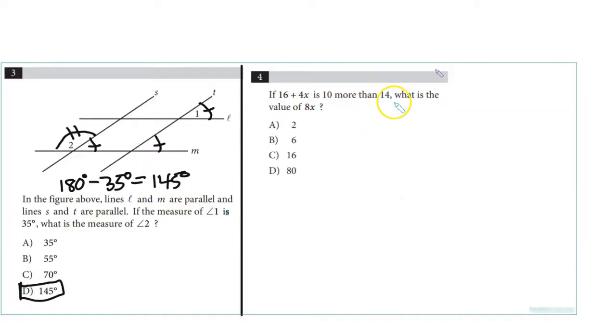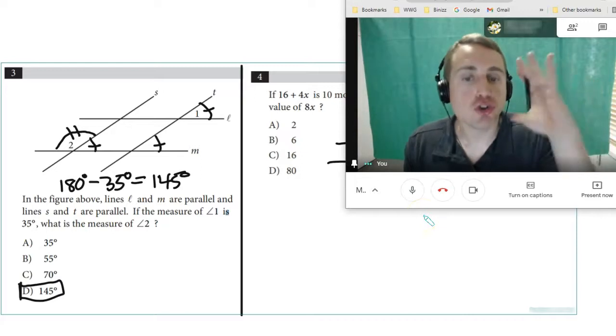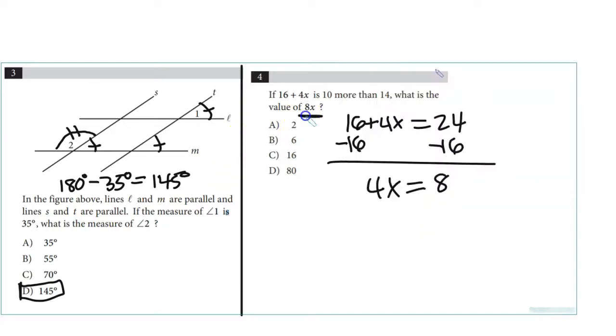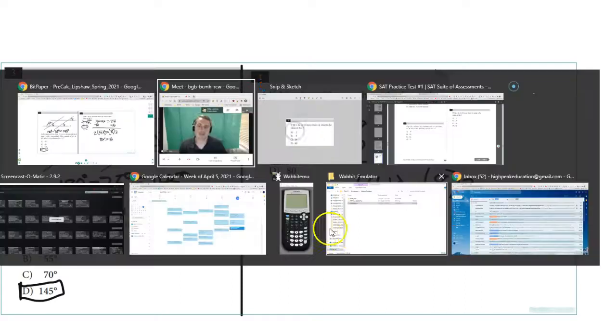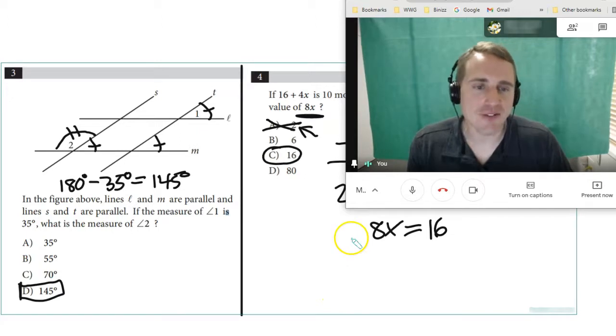Number 21: If 16+4x is 10 more than 14, what is the value of 8x? 16+4x is 10 more than 14, so that's 24. We need to find 8x. Subtract 16, so 4x is 8. Remember, answer the question. Don't solve for x. They want 8x. Multiply both sides by 2. That's 8x is 16. Notice if you'd solved for x, x would have been 2, and that would have been incorrect. Don't give them x if they're asking for 8x.